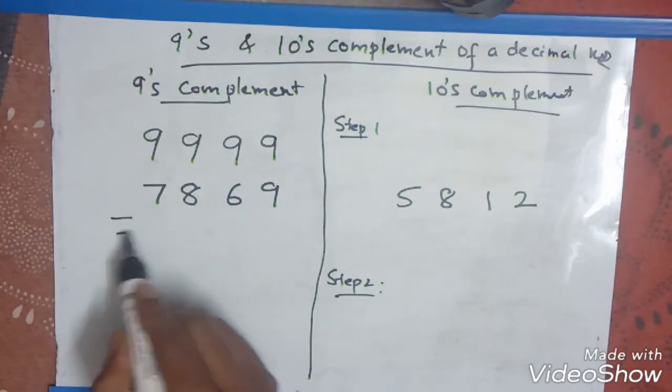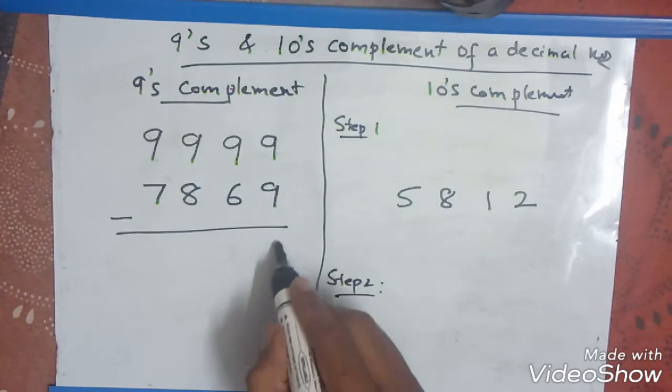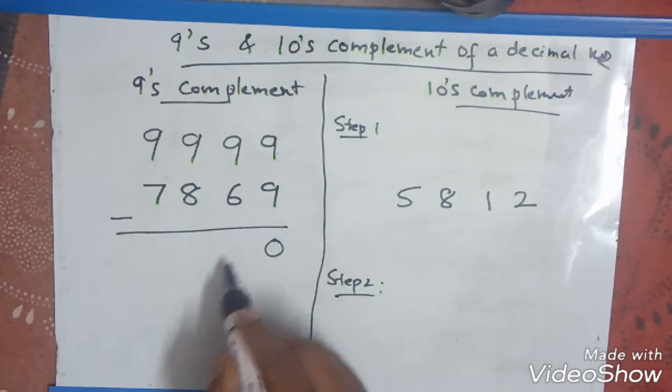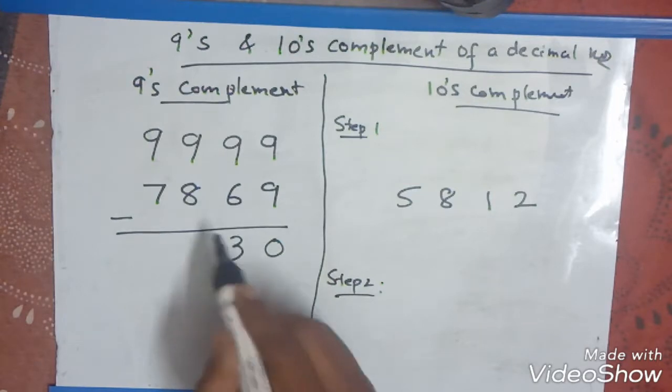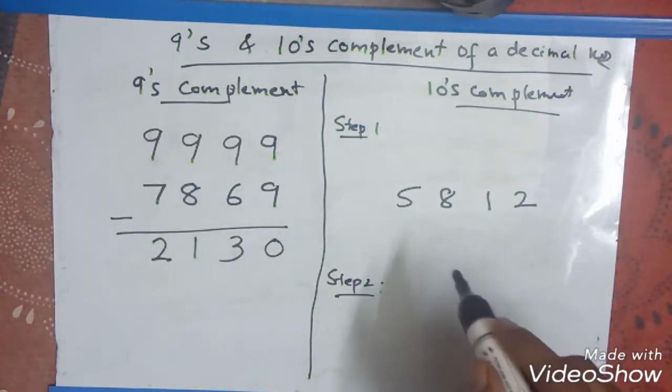9 minus 9 is 0, 9 minus 6 is 3, 9 minus 8 is 1, 9 minus 7 is 2. So this is the 9th complement of the given number: 2130.